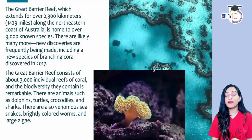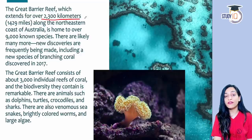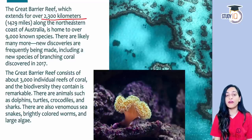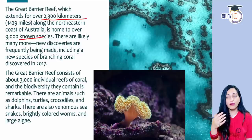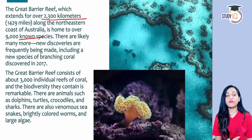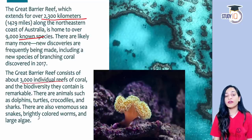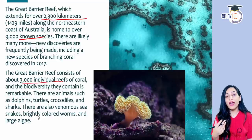The Great Barrier Reef stretches approximately 2,300 km, or 1,429 miles, along the northeastern coast of Australia. There are around 9,000 species that exist here, with new discoveries of flora and fauna still being made. There are also 3,000 individual reefs with remarkable biodiversity.